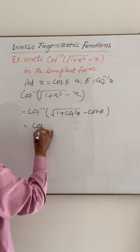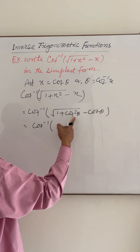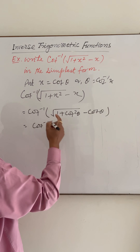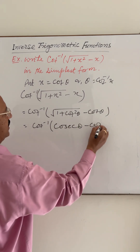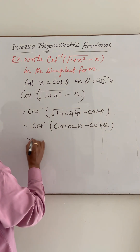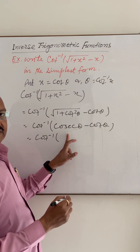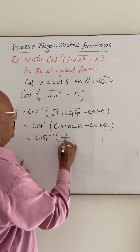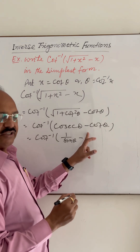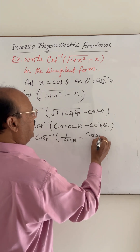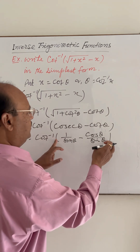Now, 1 plus cot squared theta equals cosec squared theta, and taking the root gives cosec theta. So this becomes cot inverse of cosec theta minus cot theta. Writing cosec theta as 1 over sin theta and cot theta as cos theta over sin theta, we get cot inverse of (1 minus cos theta) over sin theta.